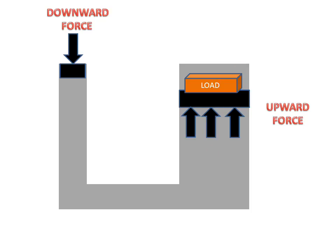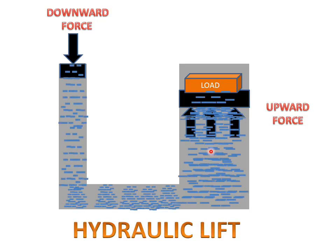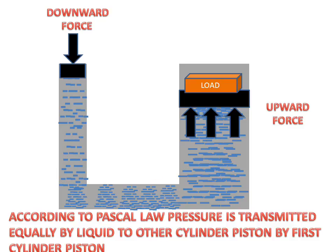Now we will see the working of the hydraulic lift. There is water or any liquid in the container. According to Pascal's Law, pressure is transmitted equally by the liquid from the first cylinder piston to the other cylinder piston. When a downward force acts on this piston, equal pressure is generated at all points of the liquid and is transmitted to the second cylinder piston.